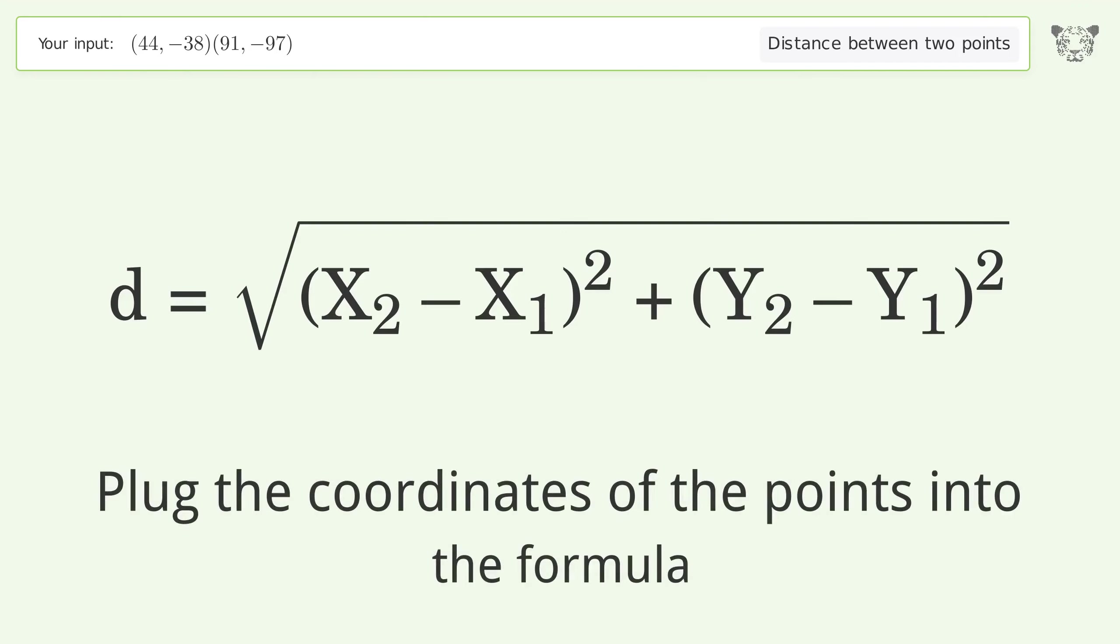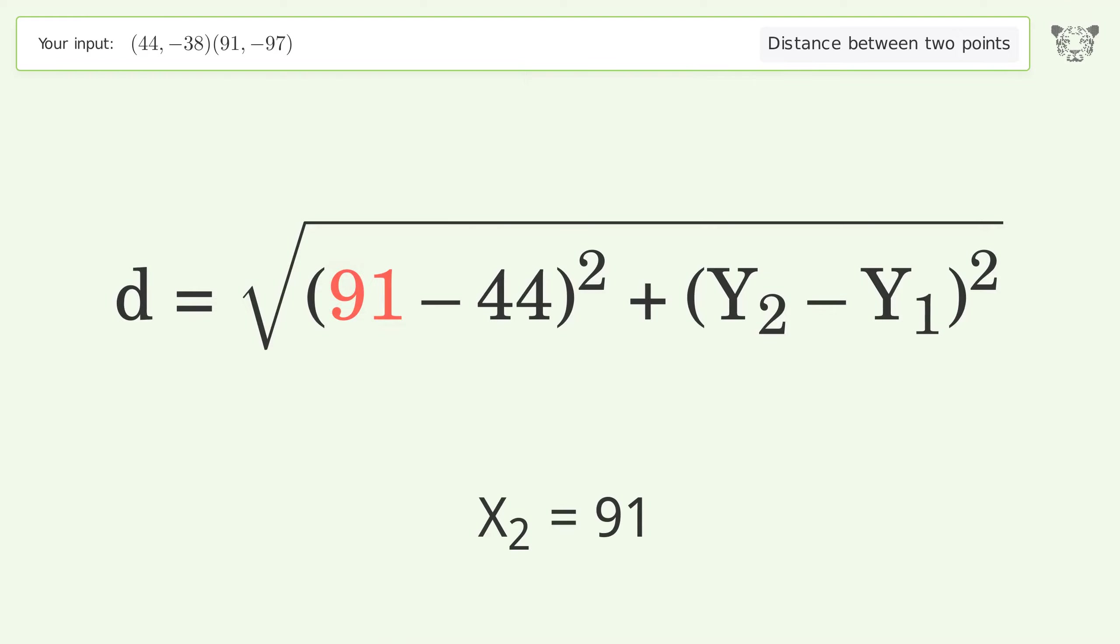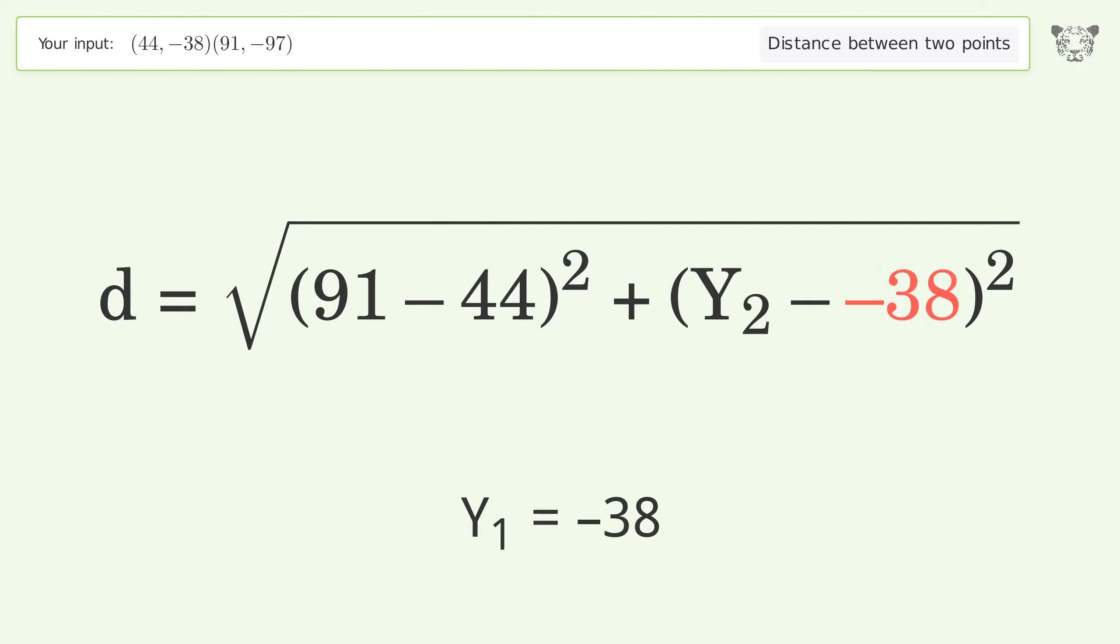Plug the coordinates of the points into the formula. x1 equals 44, x2 equals 91, y1 equals negative 38, y2 equals negative 97.